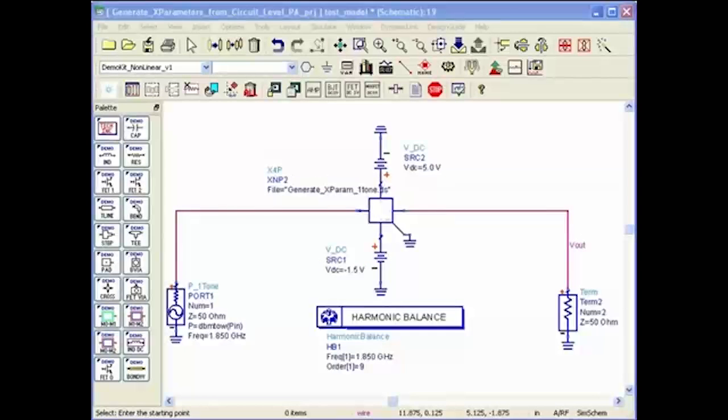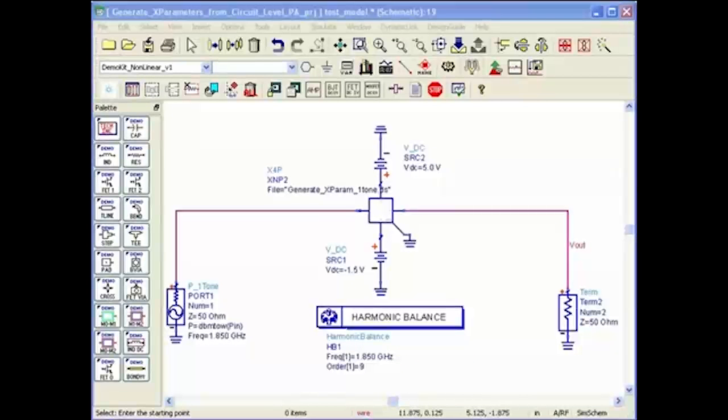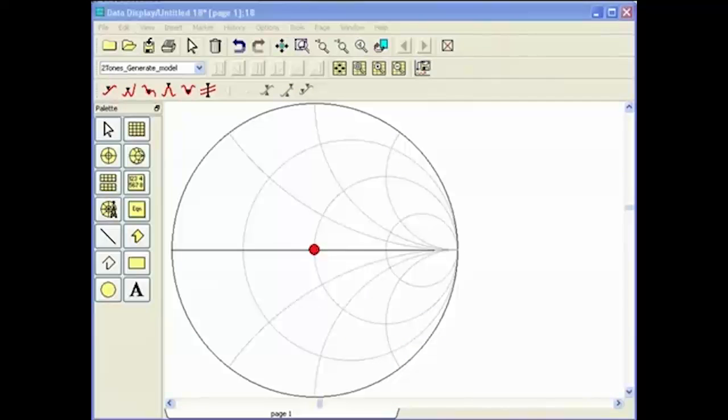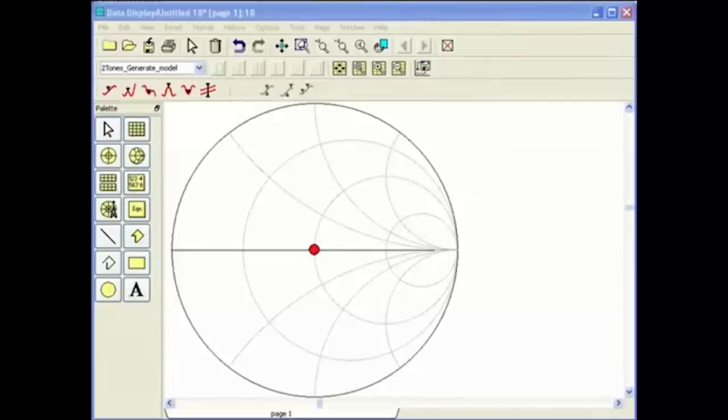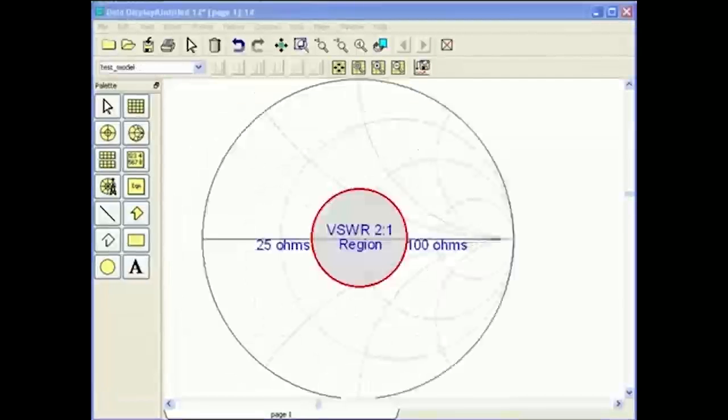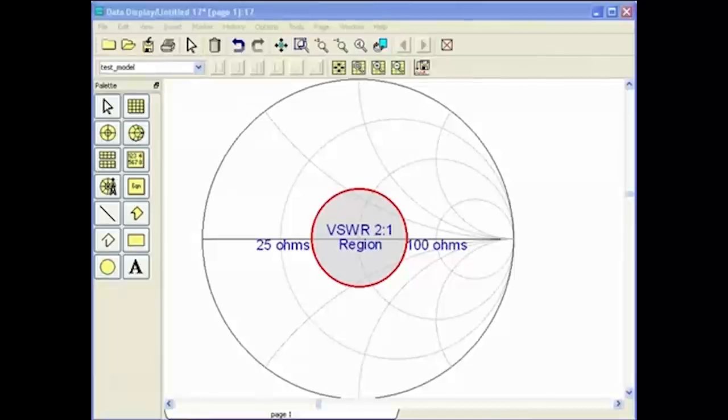The model I have just generated was done with single tone and 50 ohms load. It works very well in a system that contains cascaded 50 ohms matched modules. In fact, the model is good and accurate within 2 to 1 VSWR around 50 ohms.